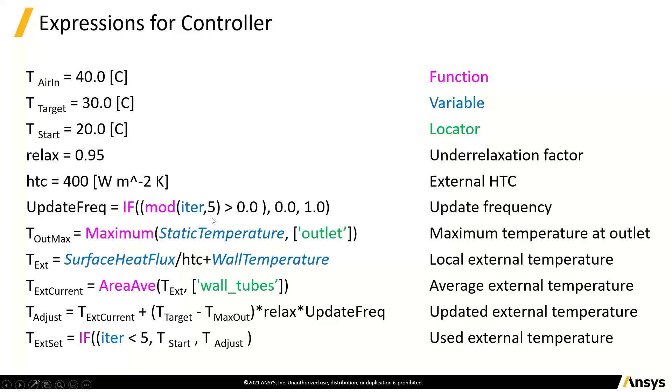So what would our expressions look like? Well, we've got some inlets. So we've got our inlet air, our target temperature we want for the outlet, the starting temperature of the walls. Let's do a relaxation factor. We need a heat transfer coefficient to put heat into the flow based on the wall temperature. In this case, it will be going out into the cold pipes.